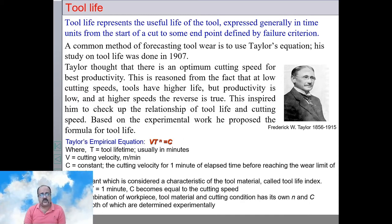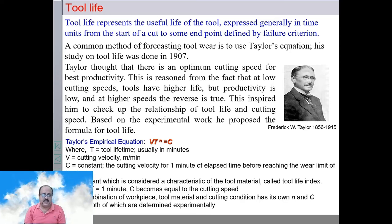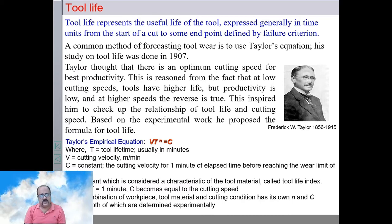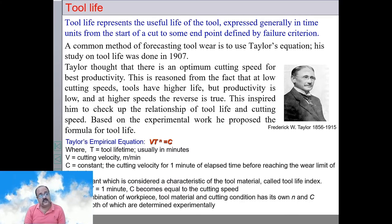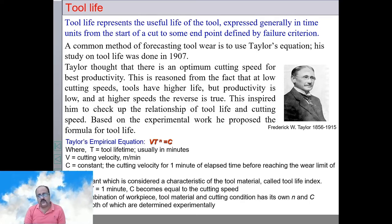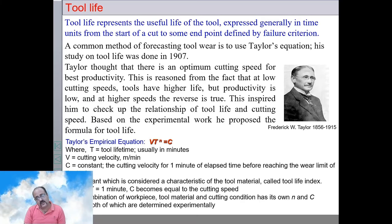We will discuss the terms: T is tool life in minutes, V is cutting velocity in meters per minute, and C is a constant. If tool life T becomes one minute, then V becomes equal to C. Therefore, C is defined as the cutting velocity for one minute tool life. It has been seen that C depends on the combination of tool and workpiece material — it is not only dependent on tool material, but on the combination of tool and workpiece material.